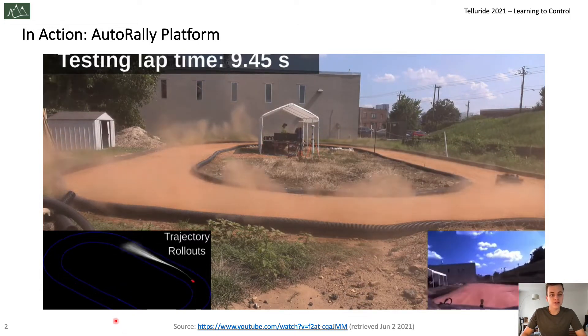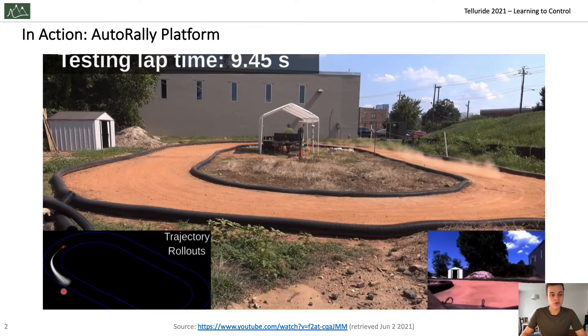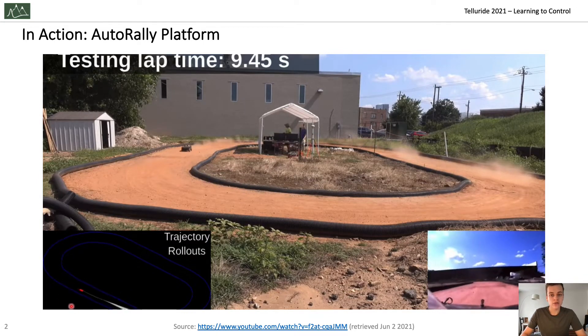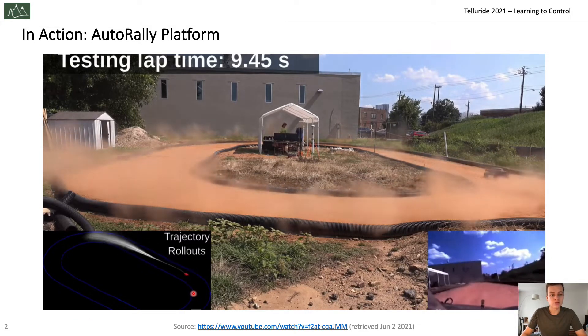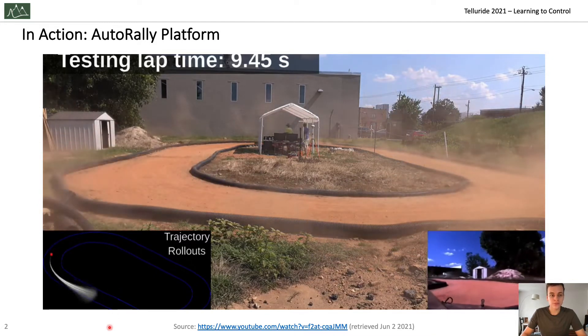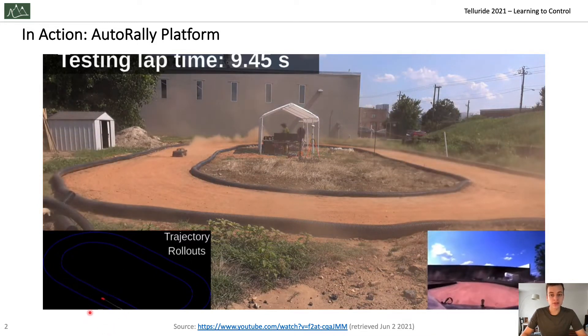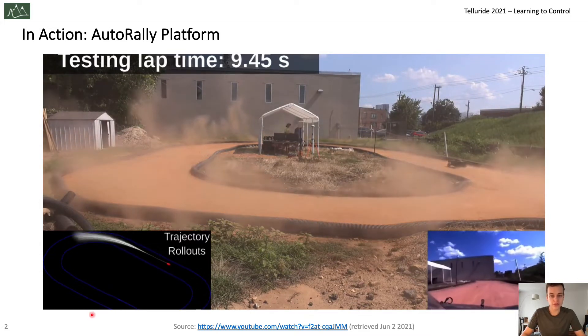In the bottom left you can actually see what the controller sees. The controller has a model of the environment. At every state it produces thousands of random input sequences. It applies those input sequences and simulates what would happen to the system if it applied the sequence.